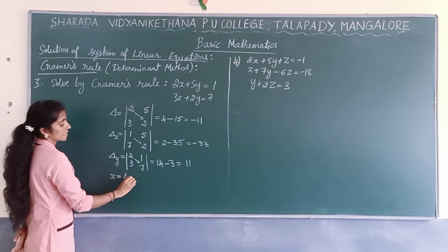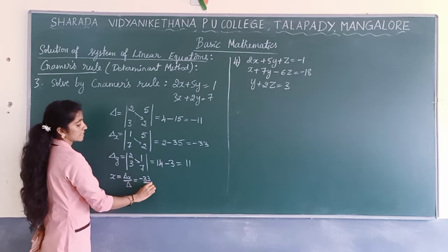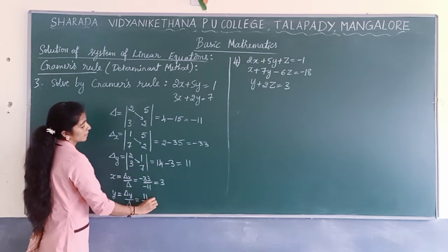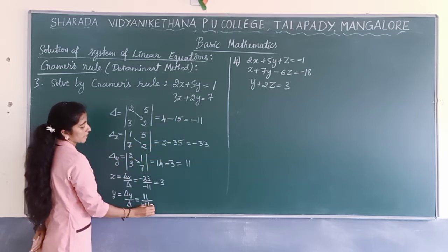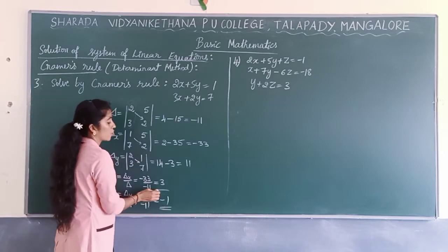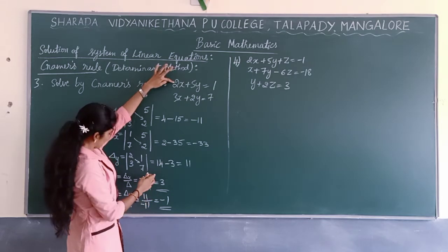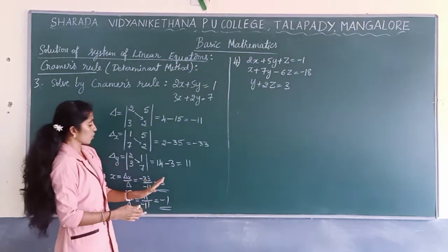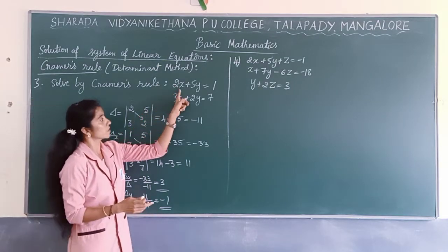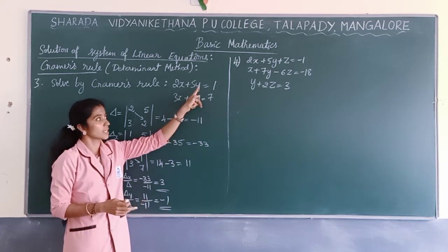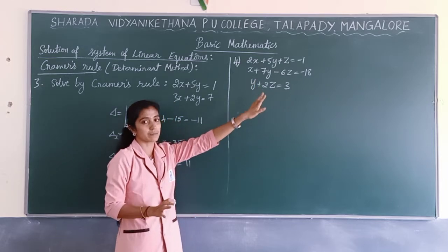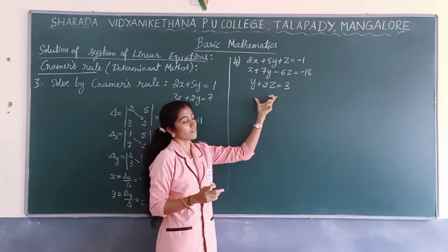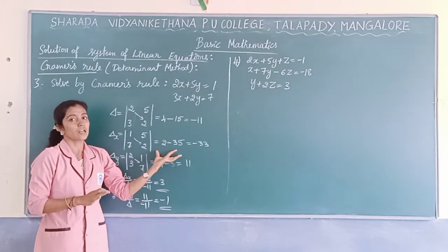For delta_Y, coefficients of x remain, replace y-column with 1 and 7: delta_Y = 14 - 3 = 11. So x = delta_X / delta = -33 / -11 = 3, and y = delta_Y / delta = 11 / -11 = -1. Two-variable problems are very important for marks in the exam. Three-variable problems are asked in preparatory and midterm exams for 5 marks.